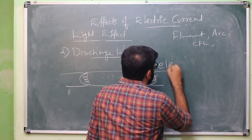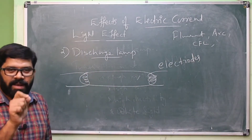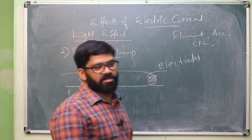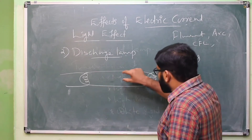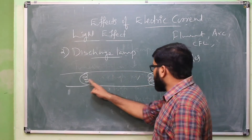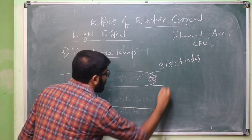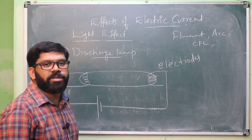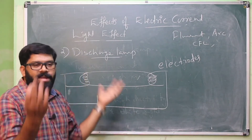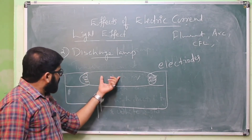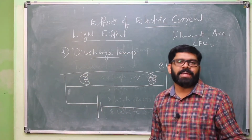At the ends of the glass tube there are electrodes — metal rods that have the ability to conduct electricity. If you apply high voltage between these electrodes, the gas inside the glass tube gets ionized. Ionization means the gas molecules become positive ions and negative ions.